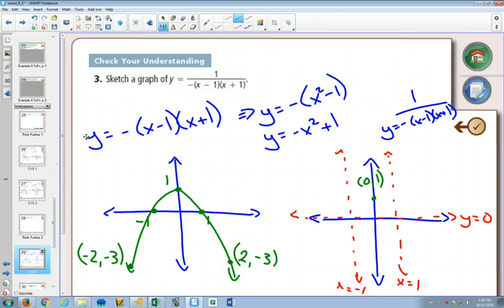2 negative 3 is going to be 2, 1 over negative 3. And we also had negative 2, negative 3. So now we'll have negative 2, 1 over negative 3.